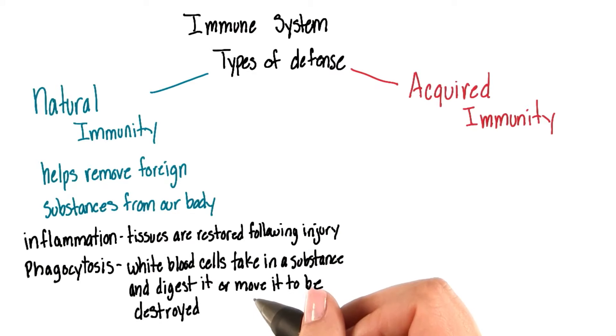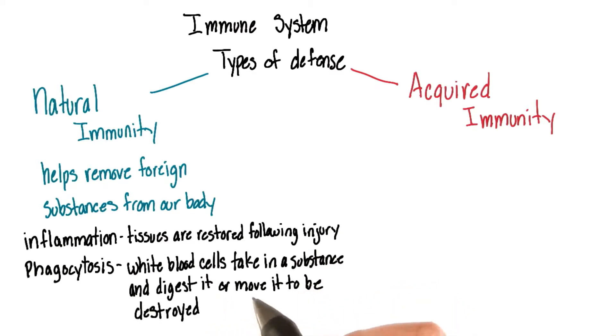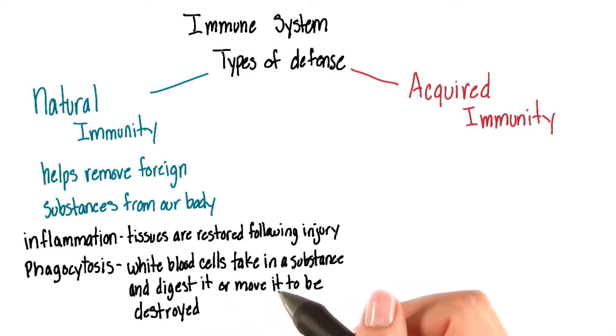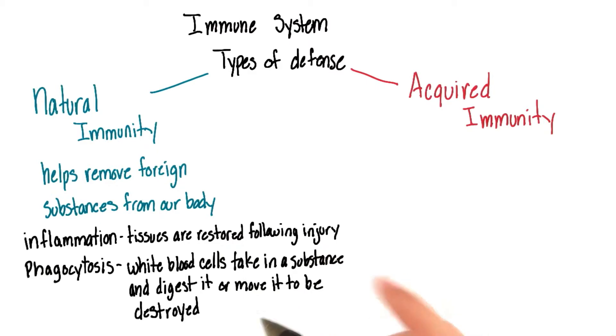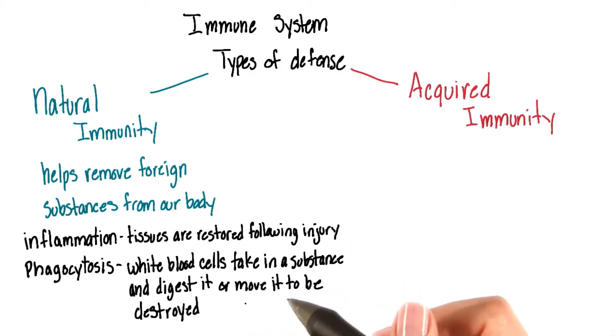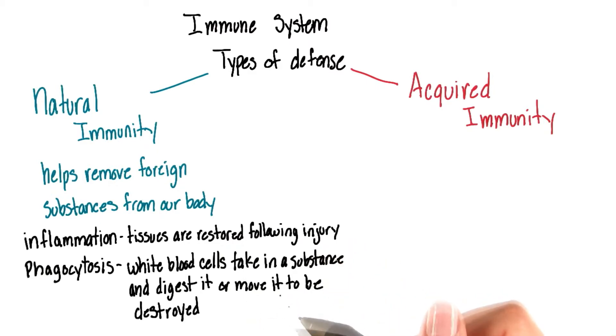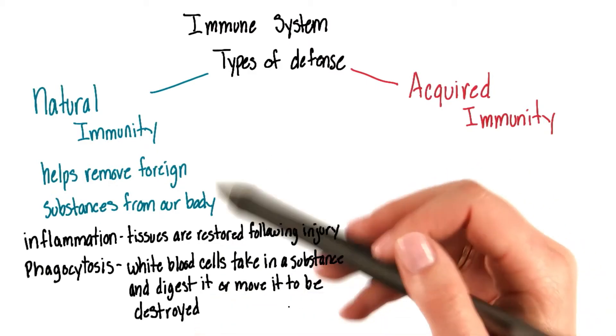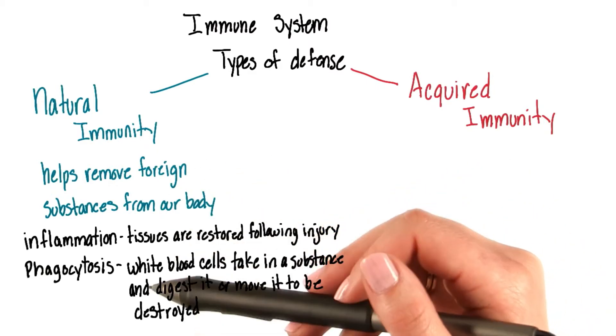Phagocytosis occurs when white blood cells take in a substance and digest it, or move it to a place where it can be destroyed. These are two types of natural immunity.